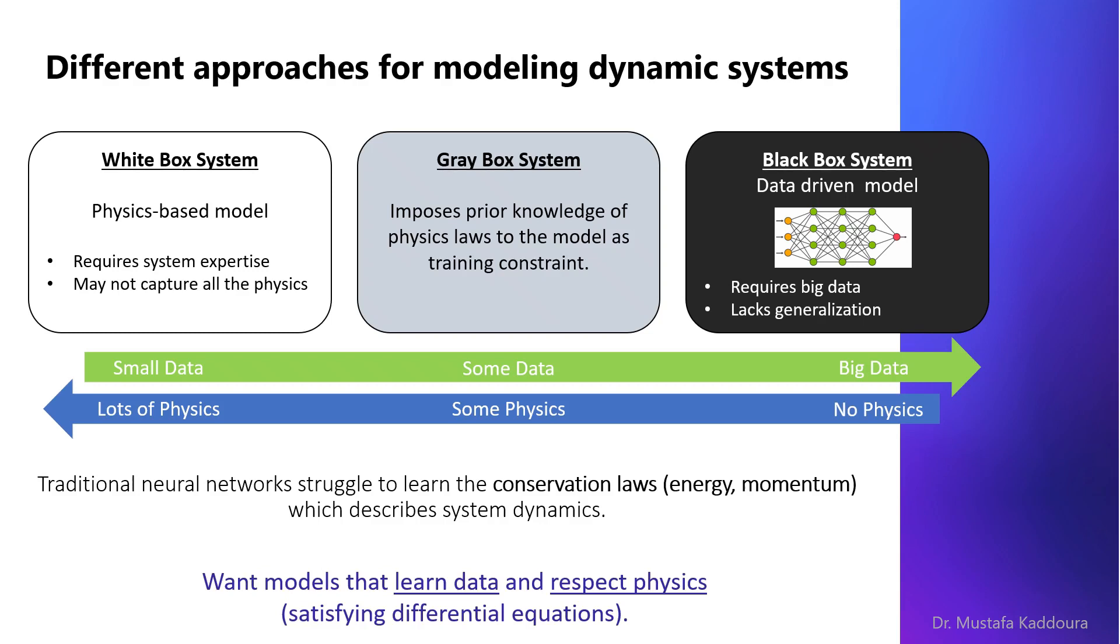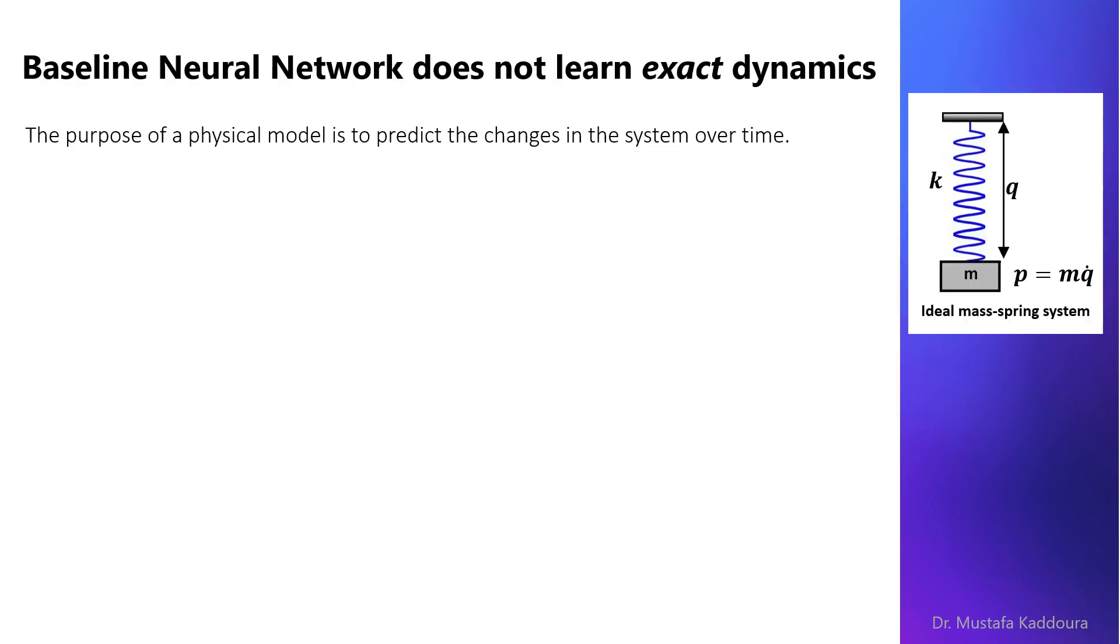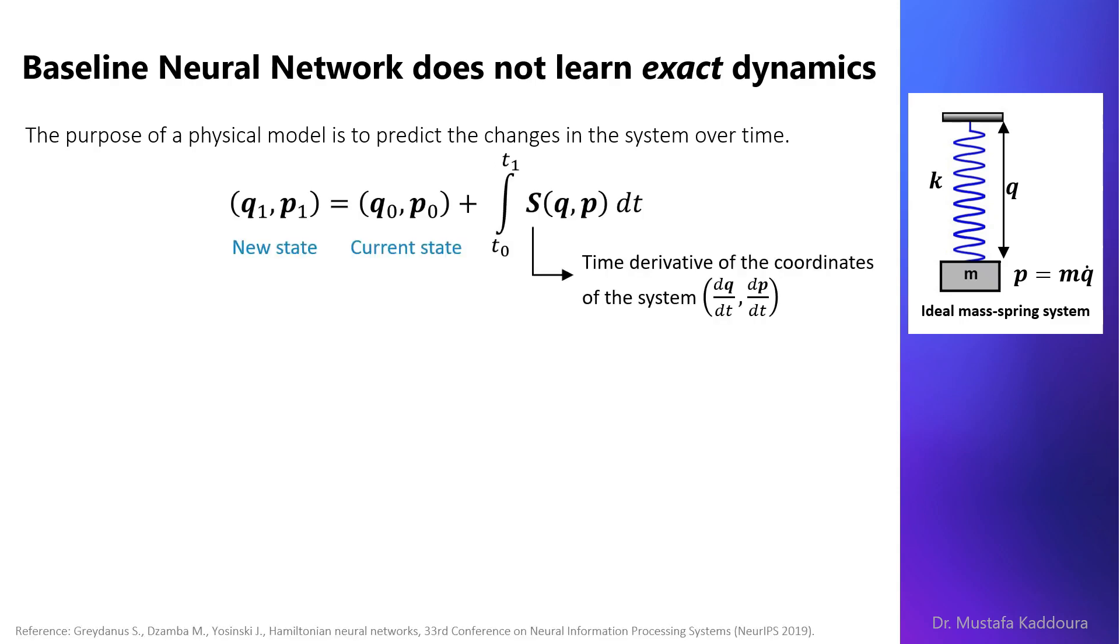Consider an ideal mass spring system. The state of a dynamic system is defined by its position q and momentum p. The purpose of a physical model is to predict the changes of the system over time. This is commonly done by predicting the next state of the system from the current one according to the following equation.